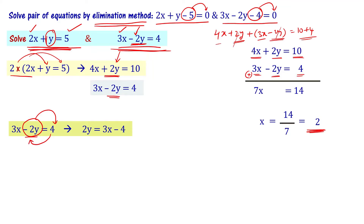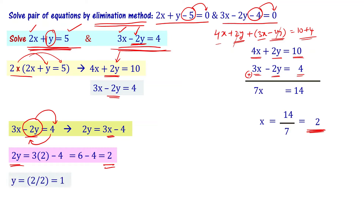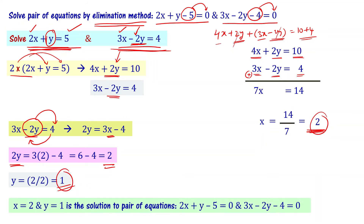Substituting x equal to 2 into the second equation: 3 into 2 minus 2y equal to 4, so 6 minus 4 equal to 2y, giving 2y equal to 2, and therefore y equal to 1. So x equal to 2 and y equal to 1 is the solution to the given pair of equations.